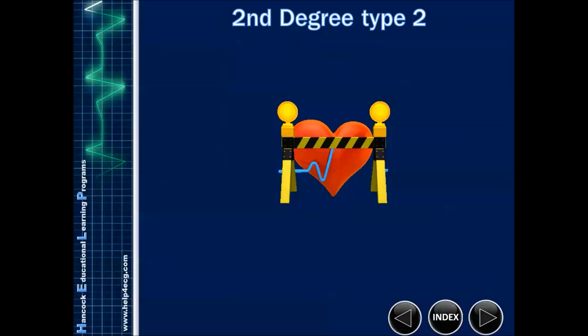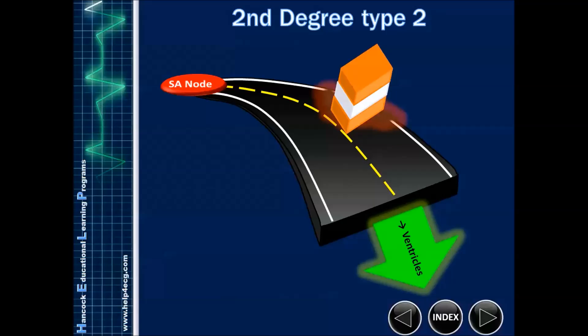So let's take a look now at second-degree type 2. How is that different from type 1? In type 1, we said that the roadway slowly built up resistance and made these speed bumps. In this case, second-degree type 2 really represents a worse underlying pathology. Part of the road has just been taken out, probably by a focal MI or something like that. So half of the road, one lane of the road, is blocked.